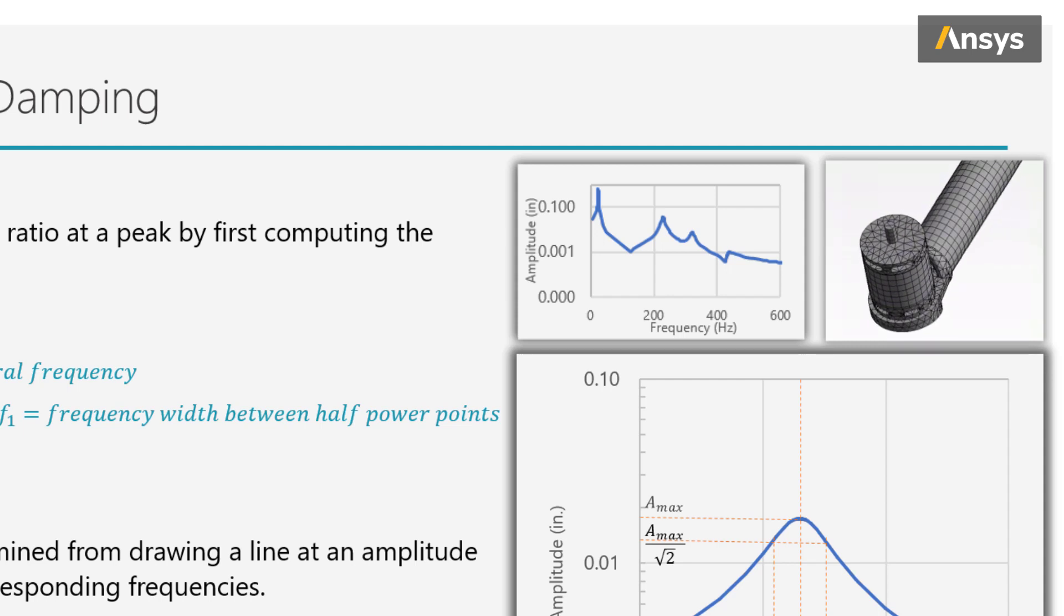For now, we have this frequency response plot, and we wish to extract a damping ratio from one or more of the peaks. By the way, the peaks may appear at the natural frequencies if the excitation sufficiently excites it.